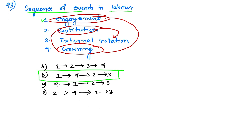The full sequence is: flexion, then internal rotation, then crowning, then restitution, then external rotation, then delivery of the shoulder, and finally delivery of the body by lateral flexion.